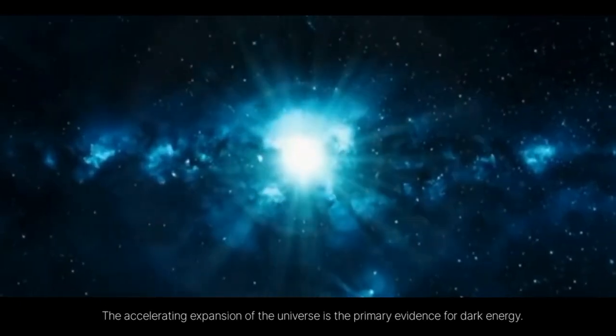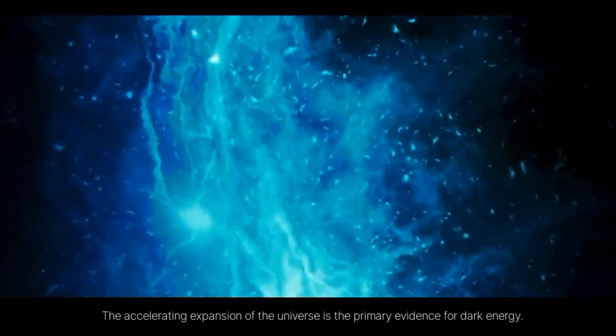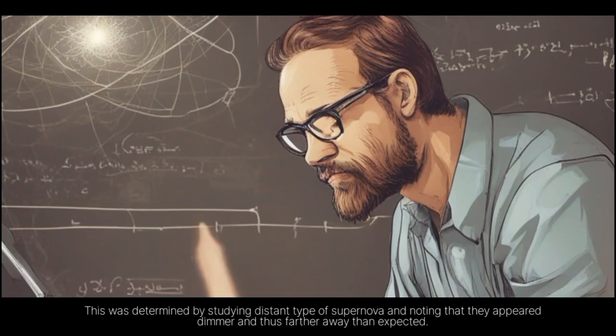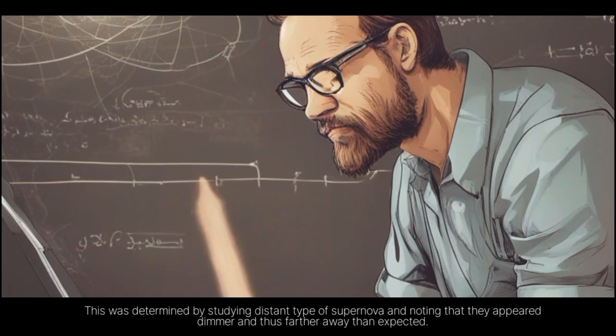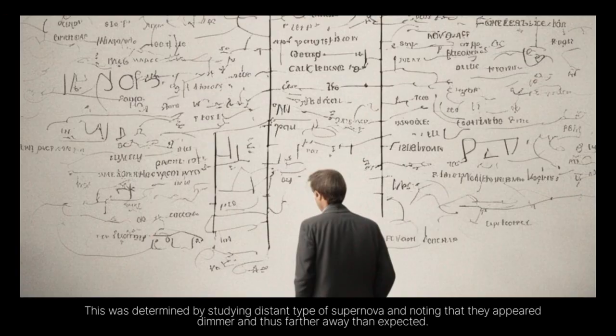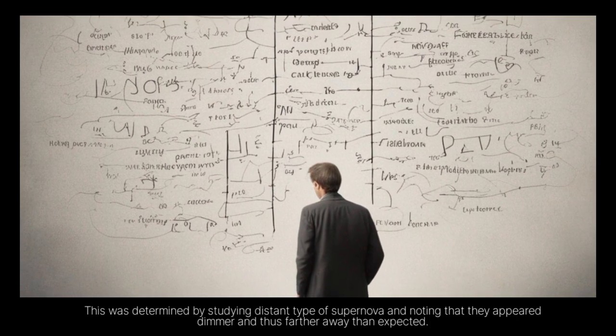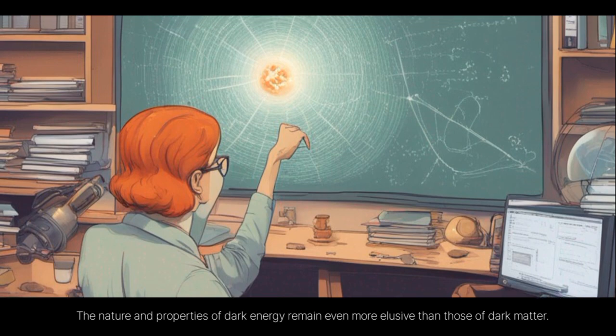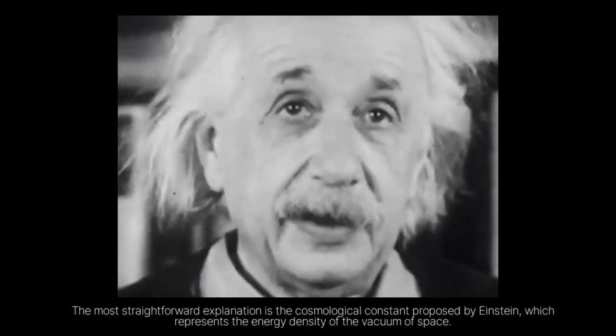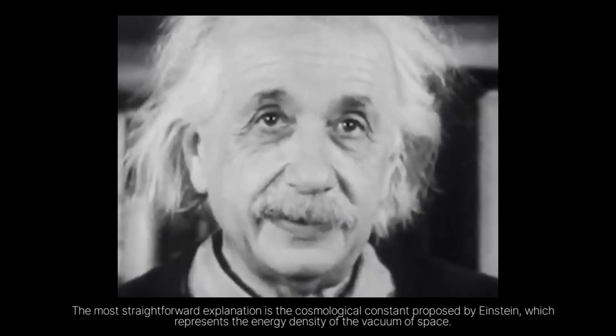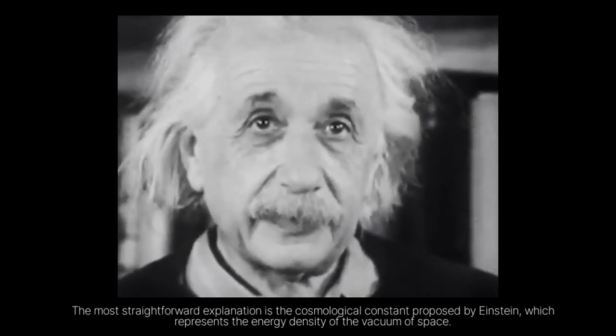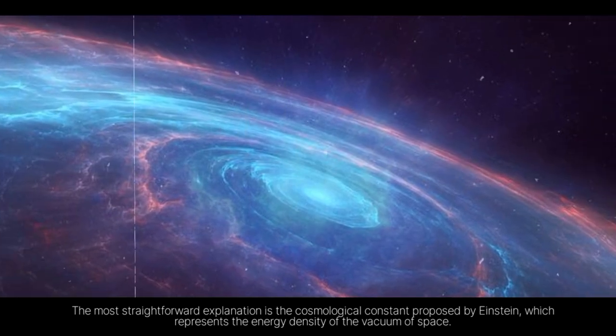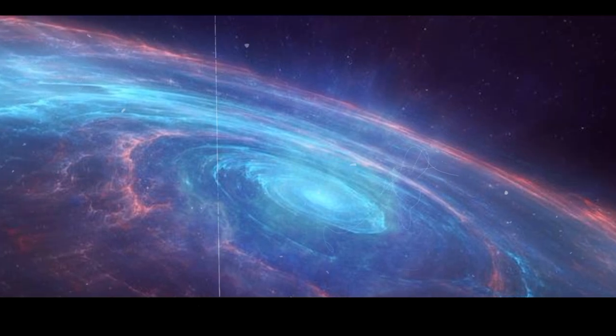The accelerating expansion of the universe is the primary evidence for dark energy. This was determined by studying distant type of supernovae and noting that they appear dimmer and thus farther away than expected. The nature and properties of dark energy remain even more elusive than those of dark matter. The most straightforward explanation is the cosmological constant proposed by Einstein, which represents the energy density of the vacuum of space.